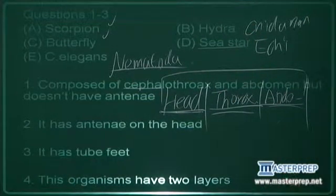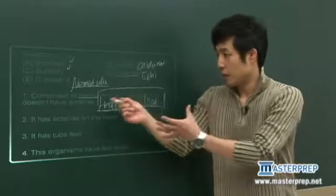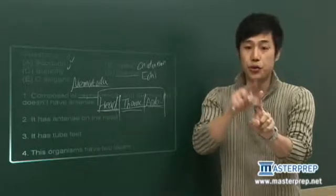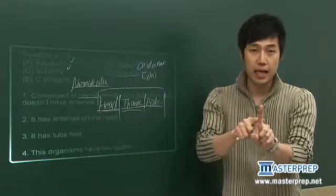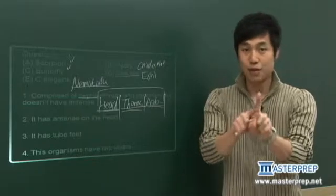Most students still get confused between roundworm and the segmented worm. Nematoda, you need to remember only one example, C. elegans. That is the only example you need to know. And annelida, earthworms, segmented worms.